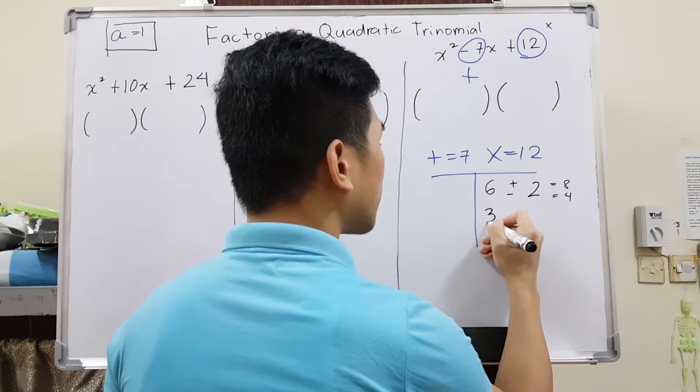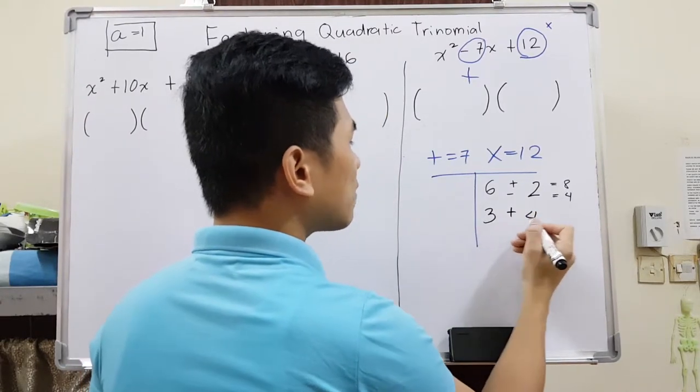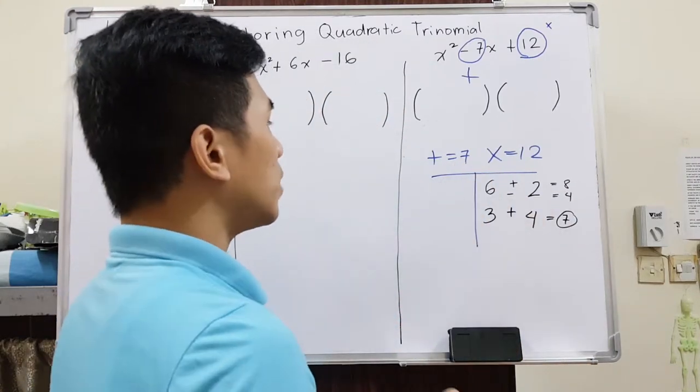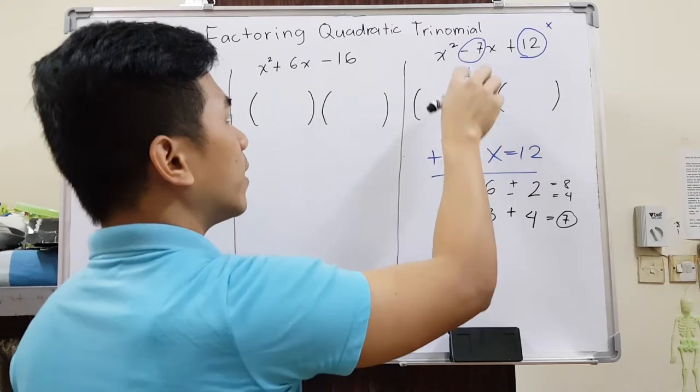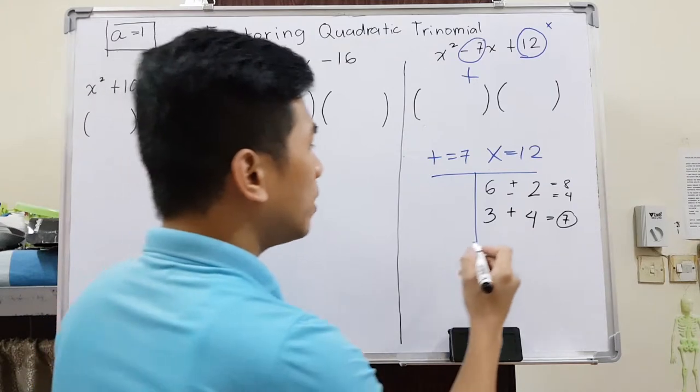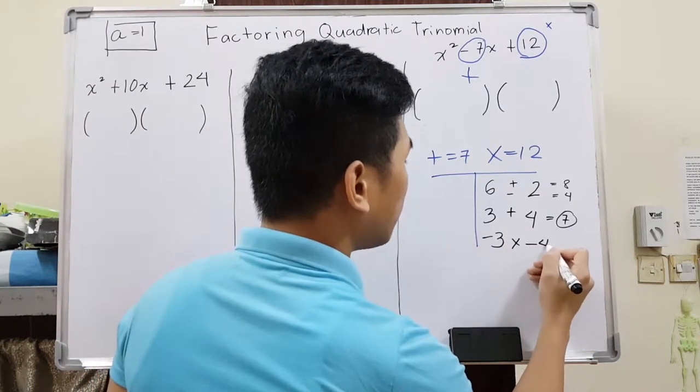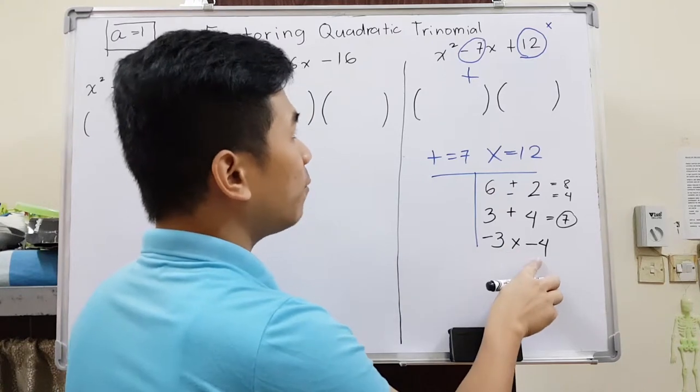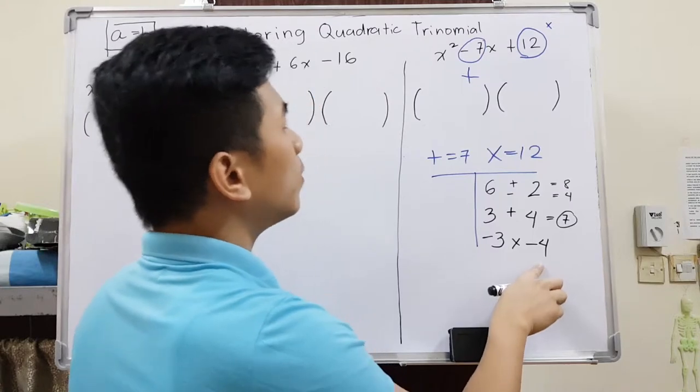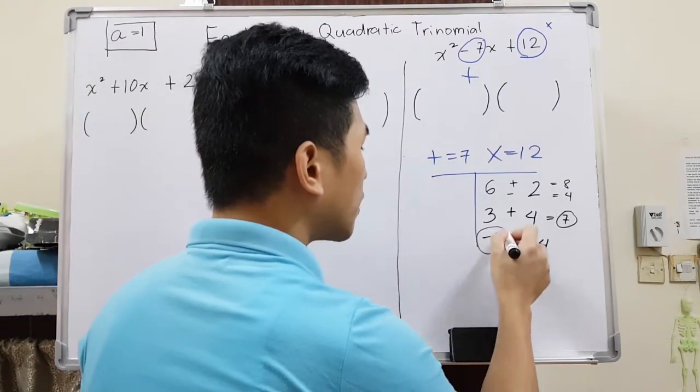Maybe I'll try 3 times 4. If I add this, 3 plus 4 gives me 7, and I need a 7. Now the question is, do I need 7 or negative 7? You can now check the sign. As you can see, we need negative. Therefore, we will be using negative 3 times negative 4. Negative 3 times negative 4 is still 12, positive 12. And negative 3 plus negative 4 is equivalent to negative 7. These are the two numbers that we are going to use.